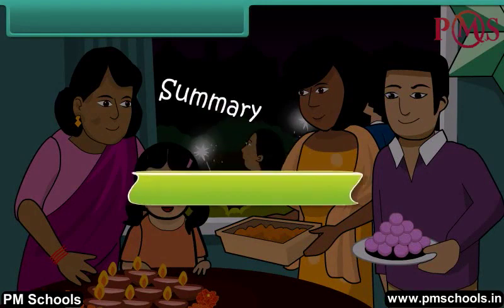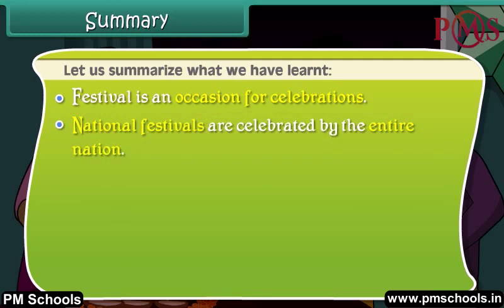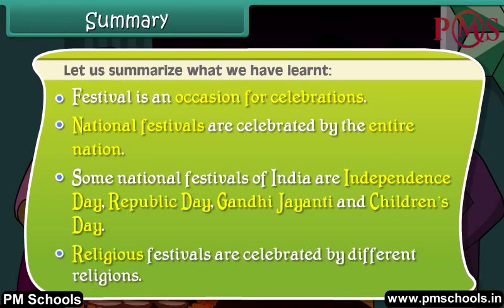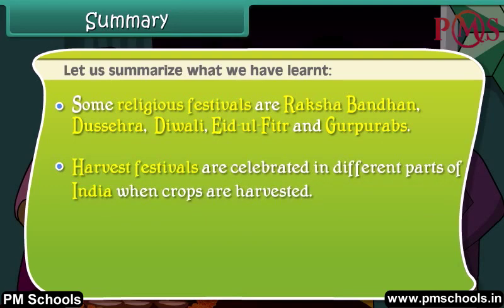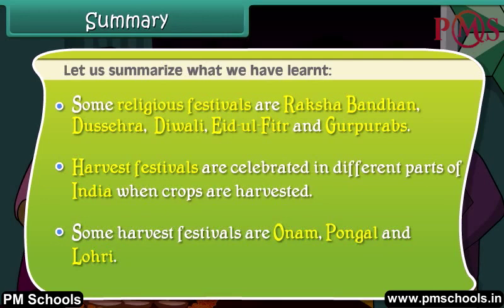Summary: A festival is an occasion for celebrations. National festivals are celebrated by the entire nation — some national festivals of India are Independence Day, Republic Day, Gandhi Jayanti, and Children's Day. Religious festivals are celebrated by different religions — some include Raksha Bandhan, Dussehra, Diwali, Eid ul-Fitr, and Guru Parabs. Harvest festivals are celebrated in different parts of India when crops are harvested — some harvest festivals are Onam, Pongal, and Lohri.